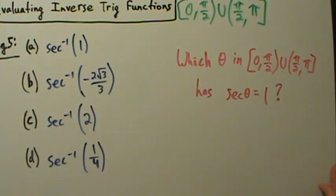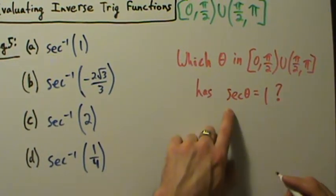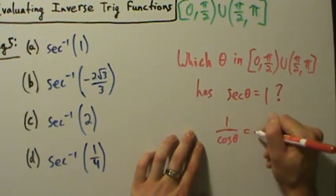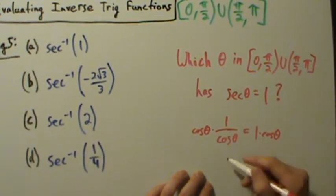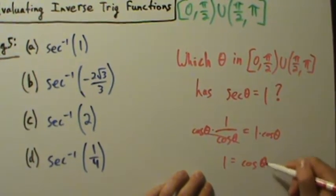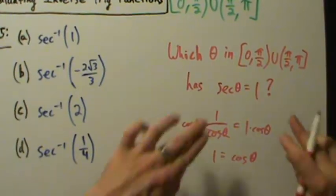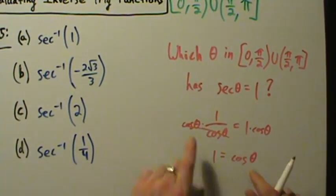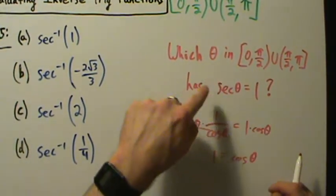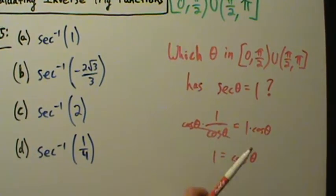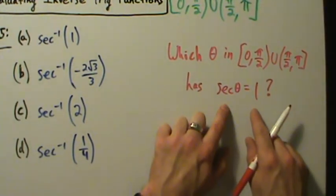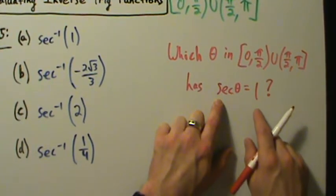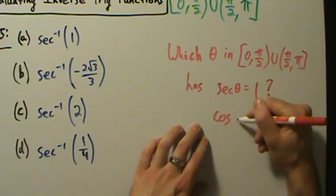Secant is kind of tricky — we don't really think about secant much, so we want to go back to the unit circle by thinking in terms of cosine. Remember, secant is 1 over cosine, so secant of theta equals 1 becomes 1 over cosine of theta equals 1. Multiplying both sides by cosine of theta gives us cosine of theta equals 1. Or as a shortcut, just take the reciprocal of both sides: reciprocal of secant of theta is cosine of theta, and reciprocal of 1 is 1.